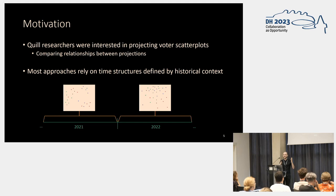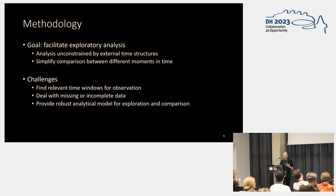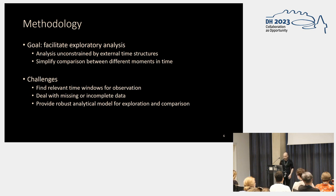On the other hand, if we were to pick every single month or every single day of the year, then we would have several projections to visualize and it would be impractical to look at all of them. Our goals were to enable researchers to perform exploratory analysis that works in both ways — navigating data guided by historical context, and also interacting with data to find interesting patterns and then going back to the historical context to figure out why that was happening. Our challenges were to find appropriate time windows, deal with incomplete or missing data, and have a robust analytical model for projecting and comparing the voting data.